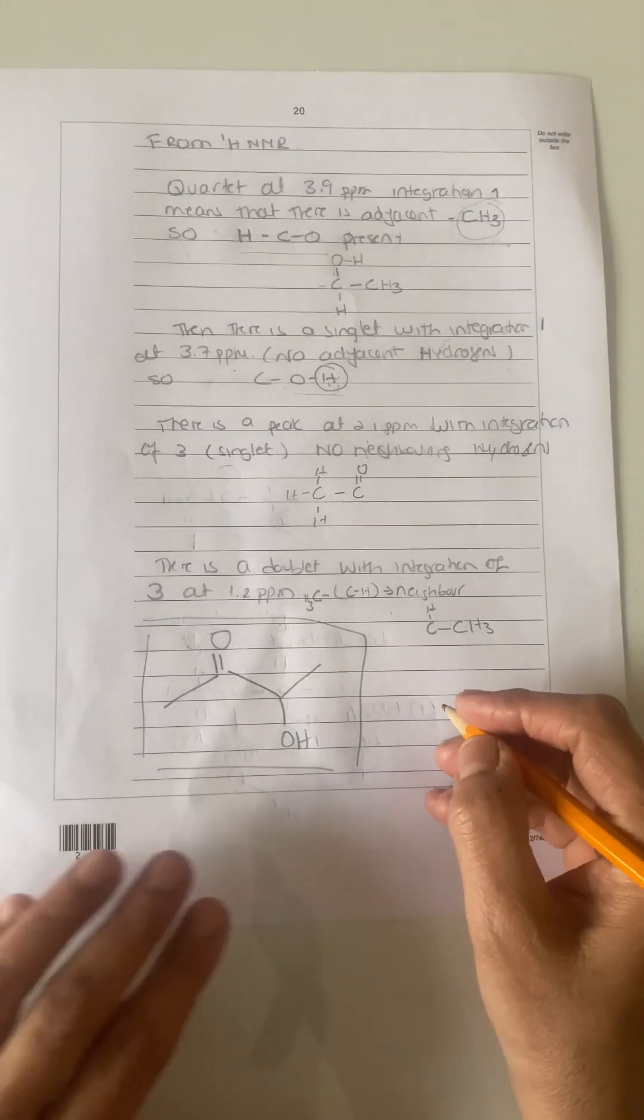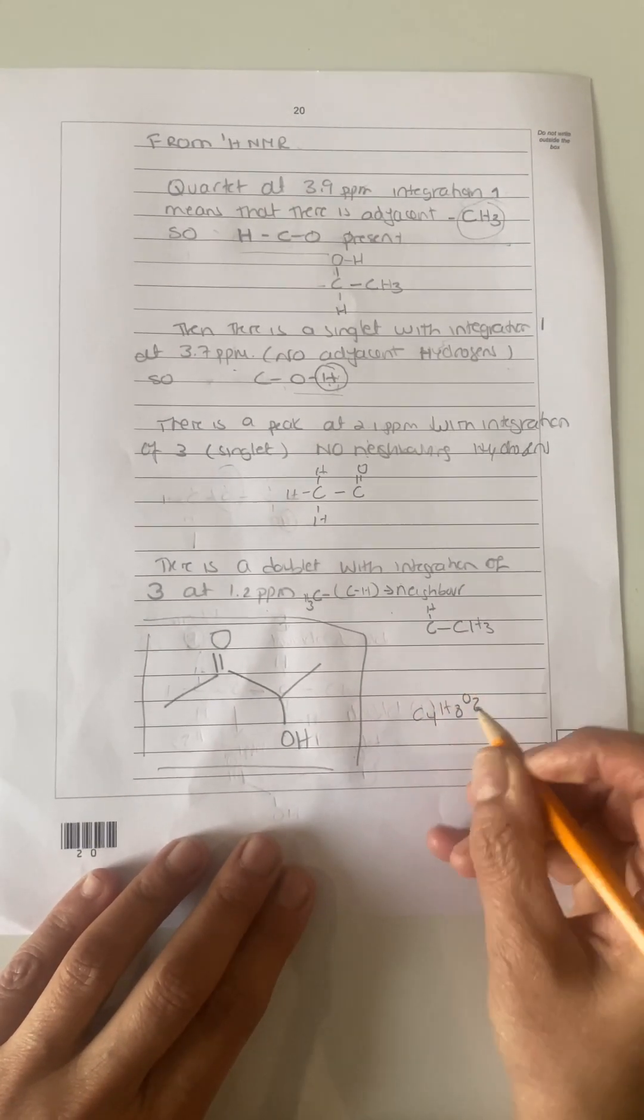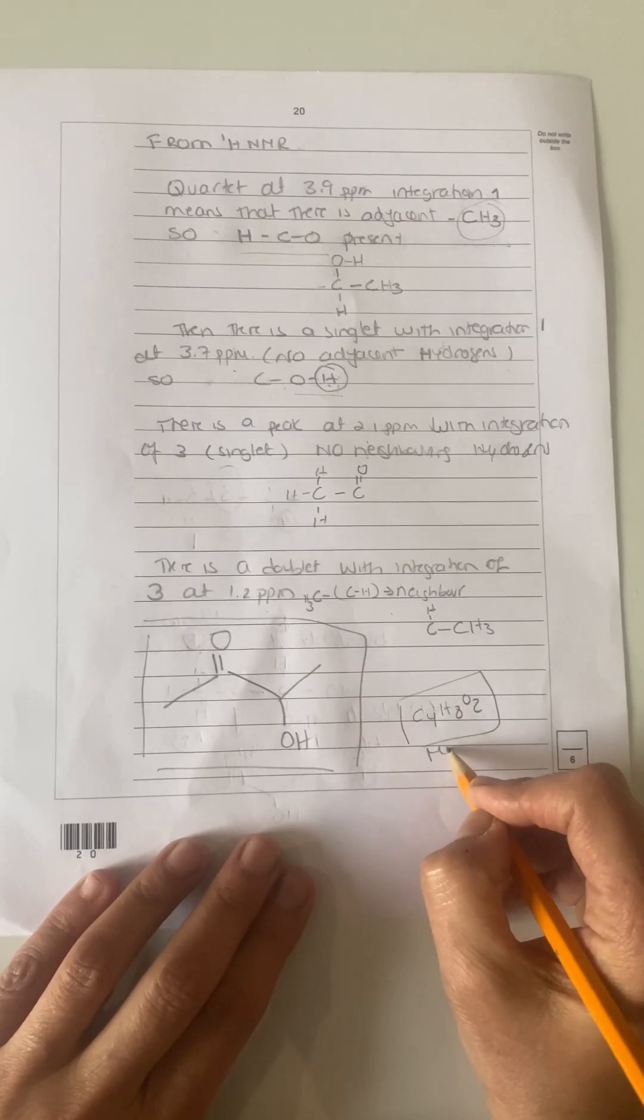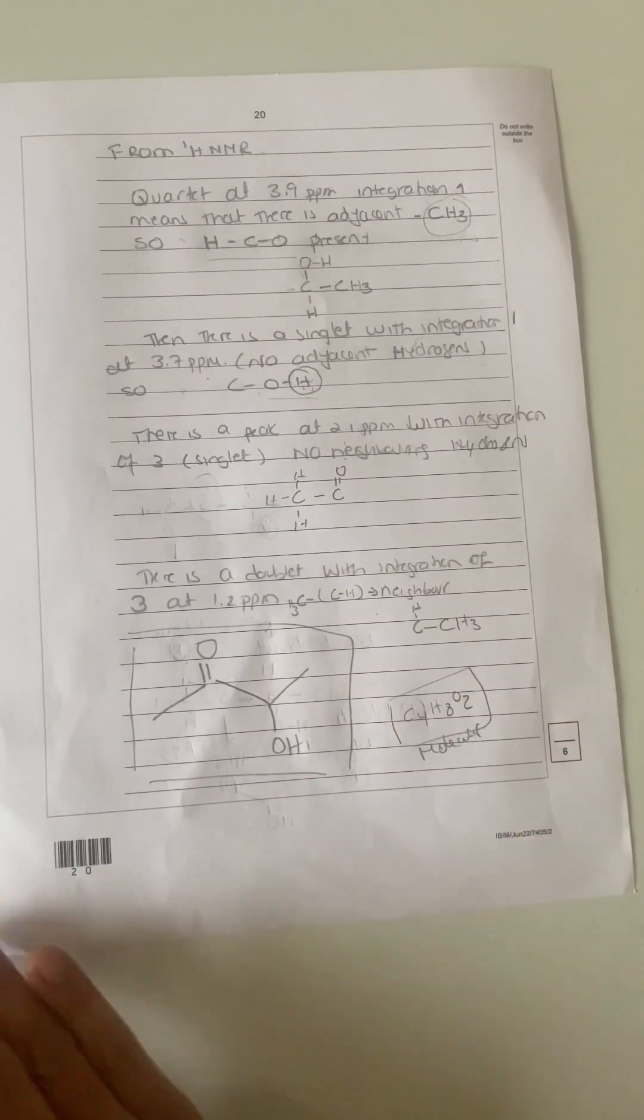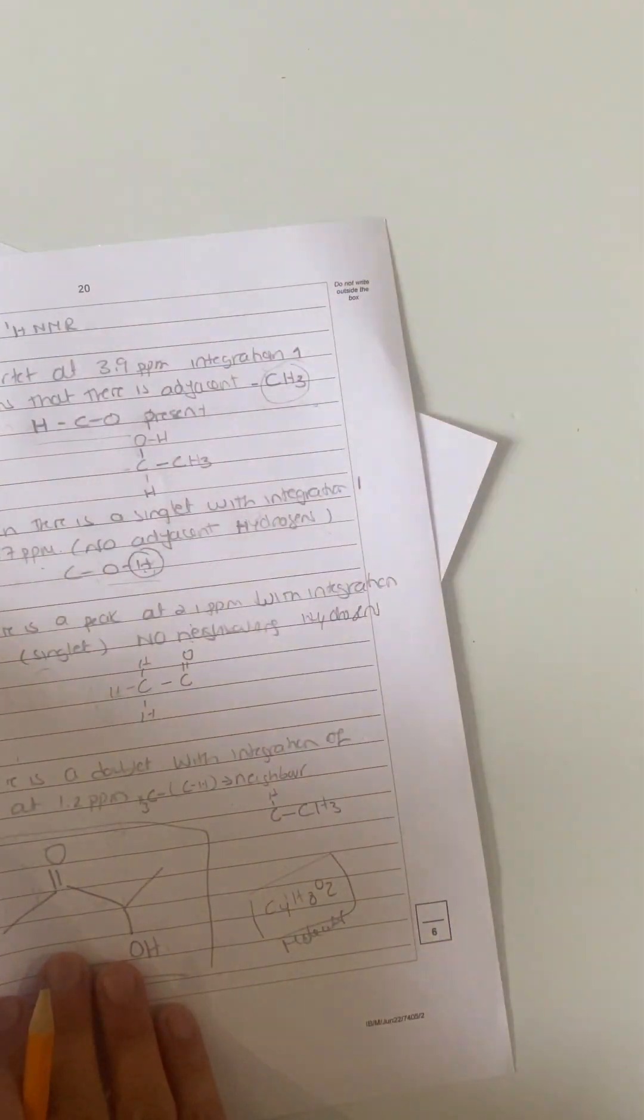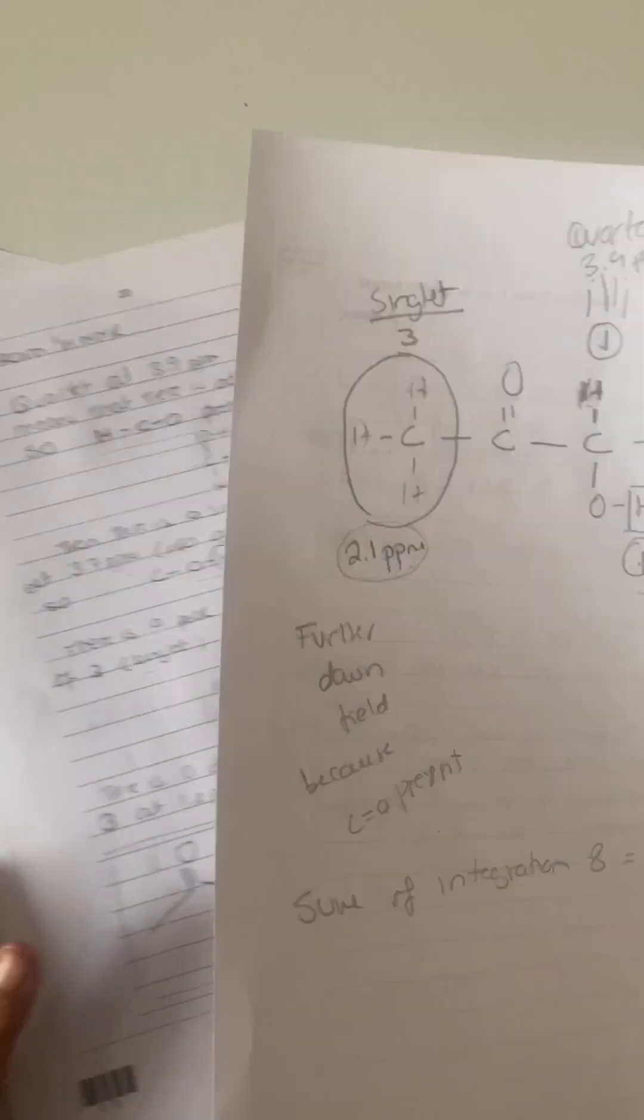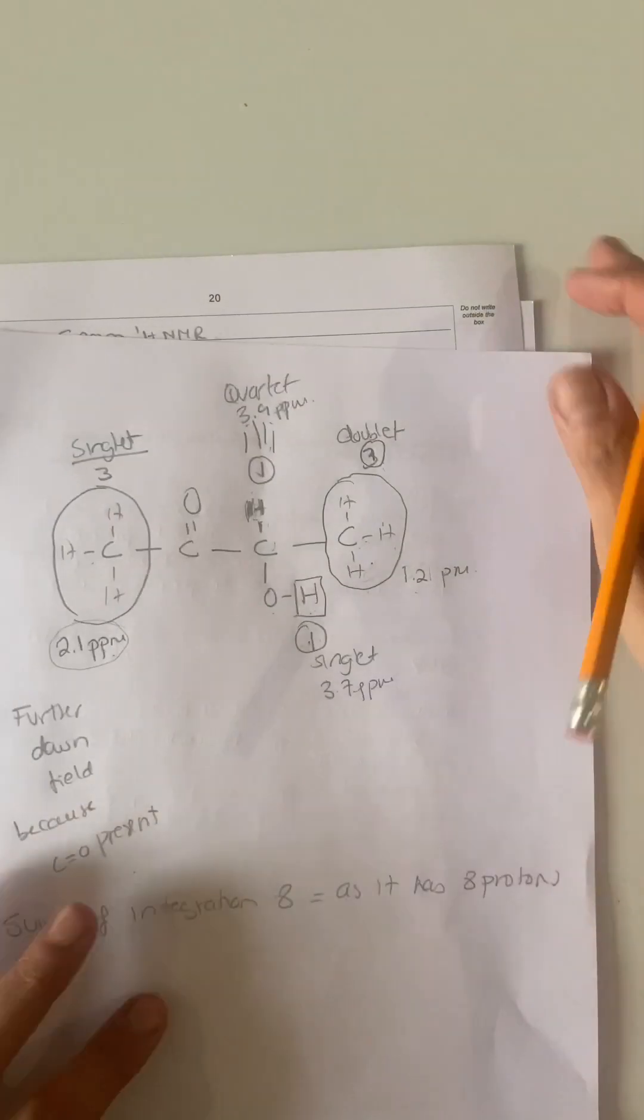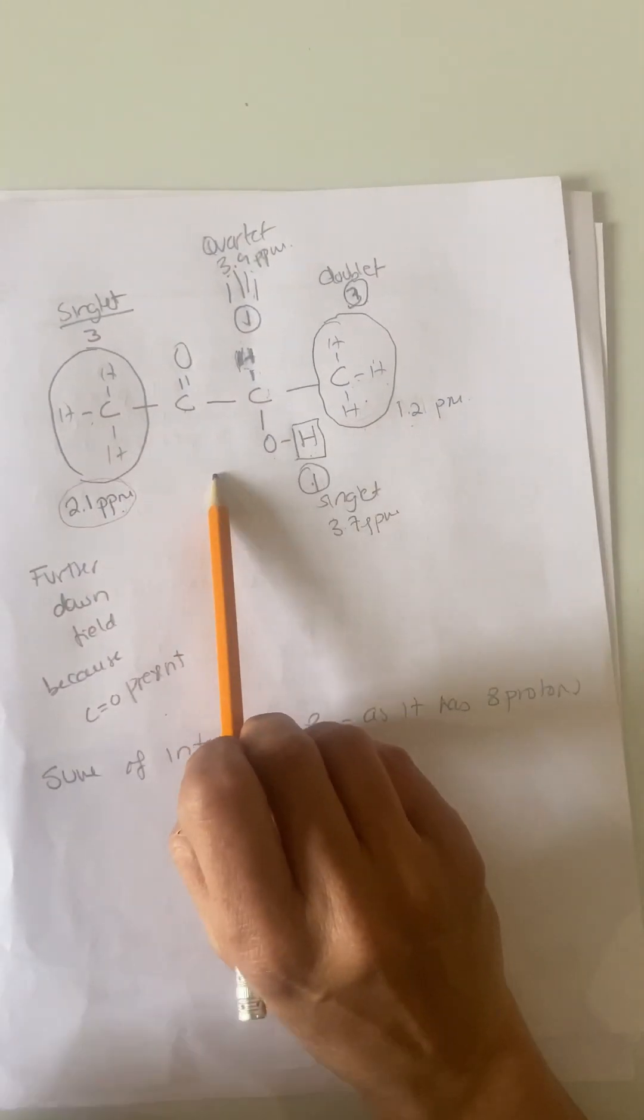The compound X is going to be C4H8O2 as a molecular formula. But I'm going to explain to you how I got to that conclusion. Hold on, it's here in the back of the paper. If I draw this structure that I've just done, joining everything together, so this is the compound that I've just come up with.